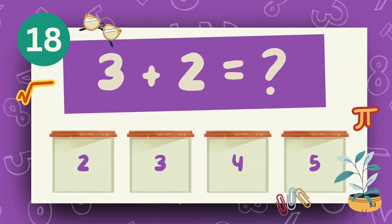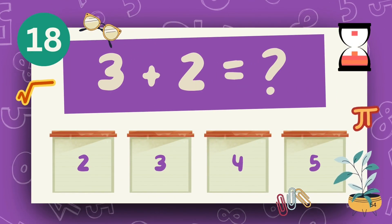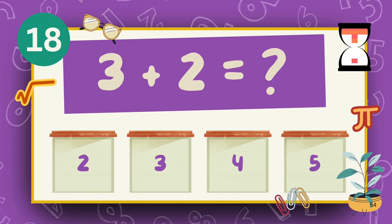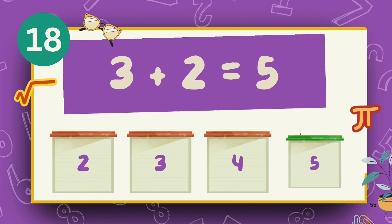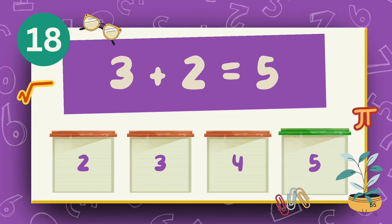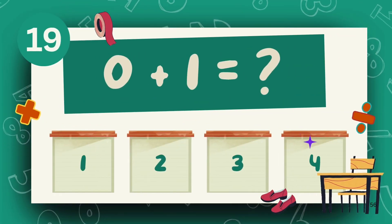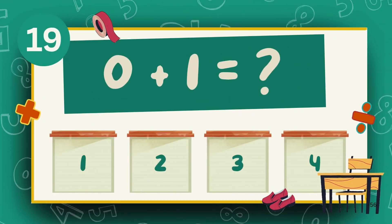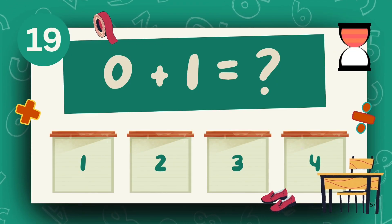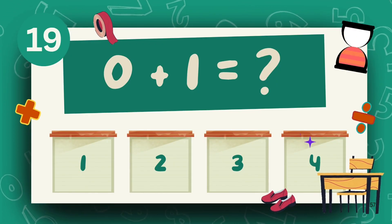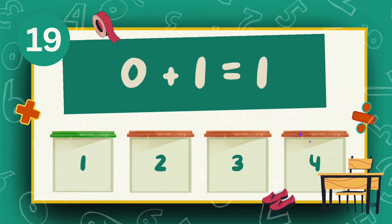What is 3 plus 2? The answer is 5. What is 0 plus 1? The answer is 1.